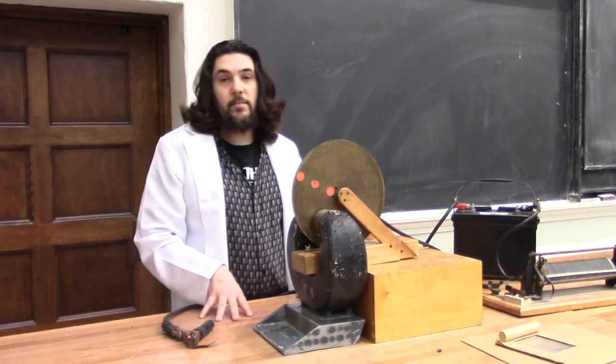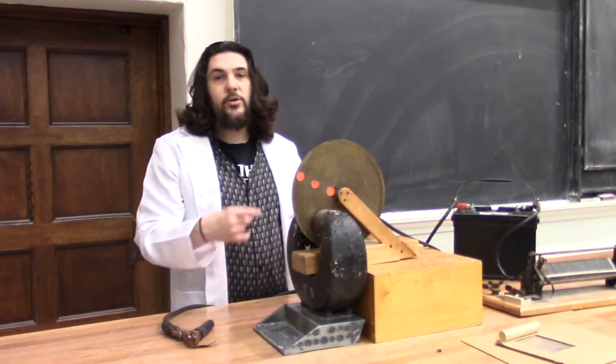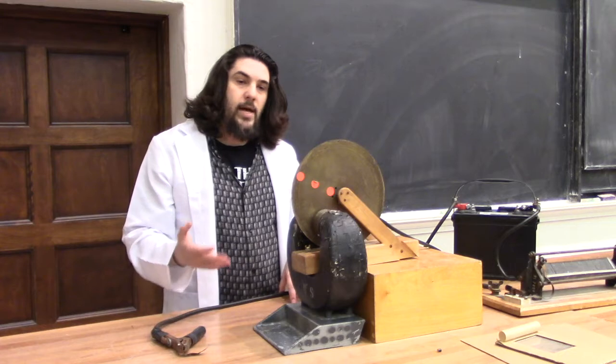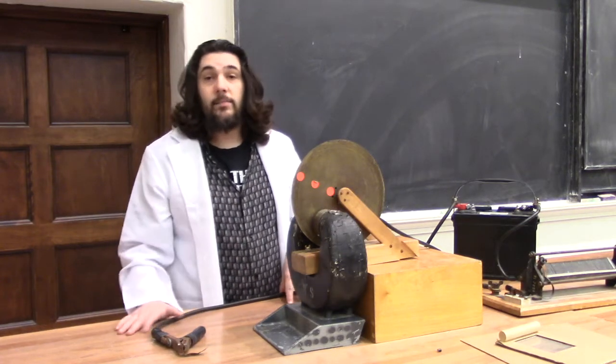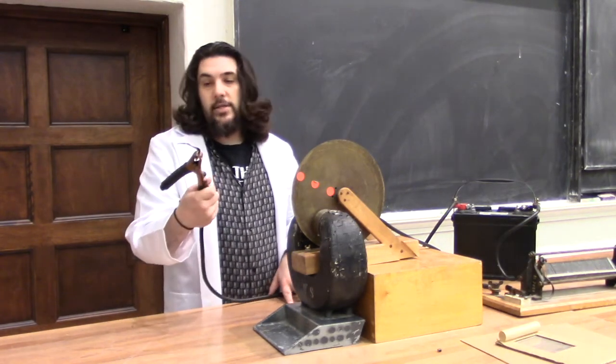Now the old version of the Barlow motor had a pool of mercury at the bottom to ensure good contact. Mercury is not a great material for handling by hand, so I'm going to be connecting it using this electrode.